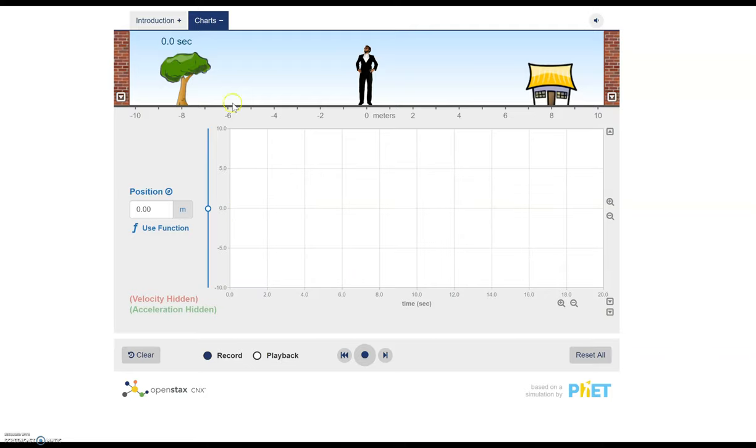So position's on the y-axis and then time is on the x-axis. So I'm going to click record right now and we see that the man is stationary and what we have is just a horizontal line. So as time's moving forward, nothing is happening to the position of the man.